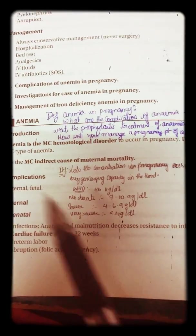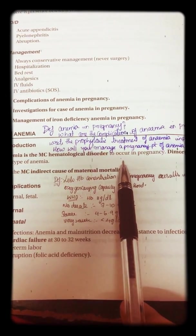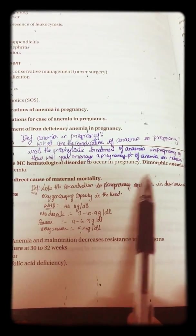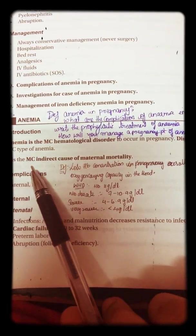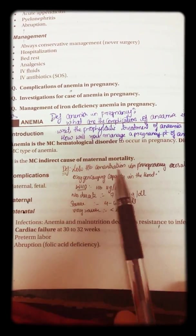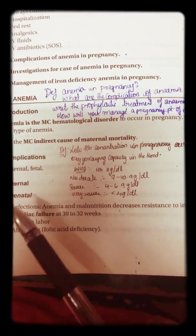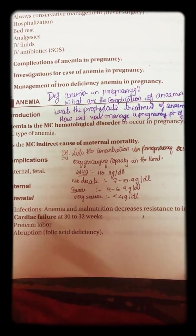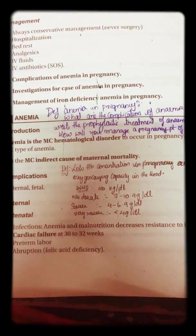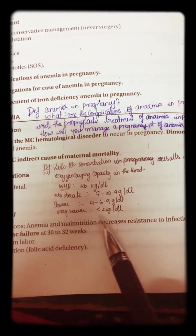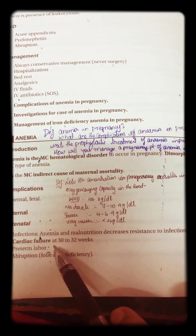Anemia is the most common hematological disorder to occur in pregnancy. Dimorphic anemia is the most common type and it is the most common indirect cause of maternal mortality. Complications are maternal and fetal. Maternal complications occur antenatally, intrapartum, and postpartum. Antenatal complications include infections, malnutrition, decreased resistance to infection, and cardiac failure.